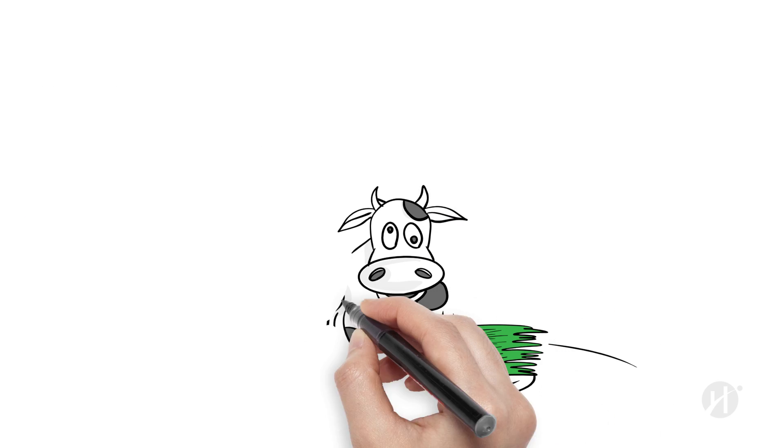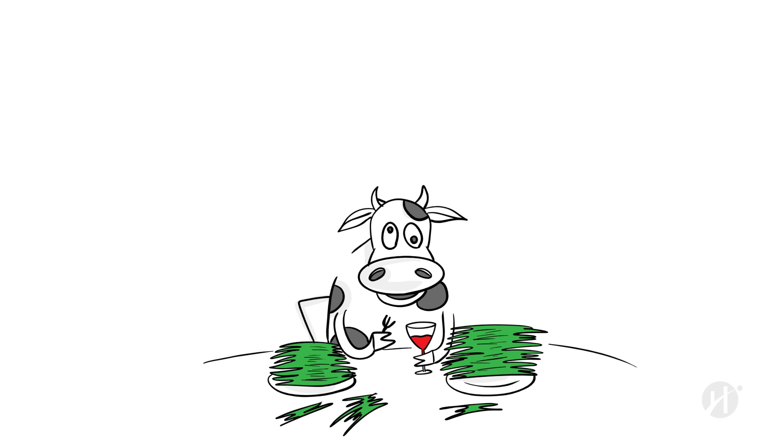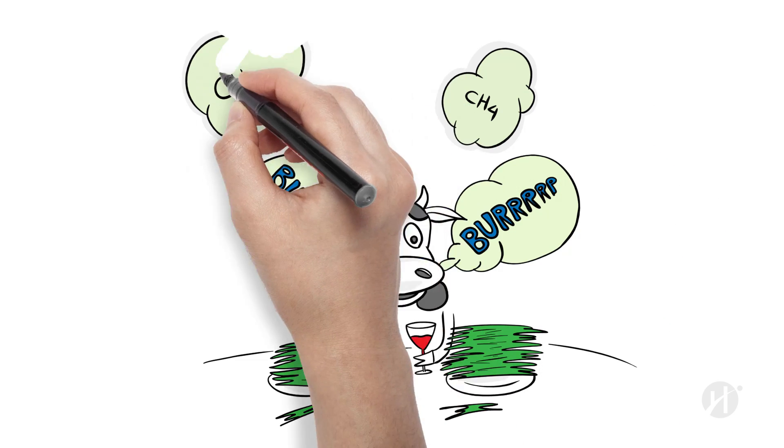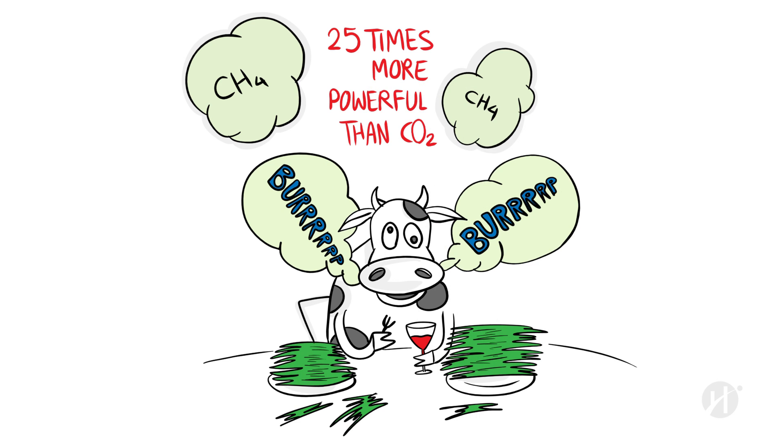When cows eat plants, they rely on bacteria in their stomachs to digest their food. While this is happening, methane, a greenhouse gas 25 times more powerful than carbon dioxide, is released into the atmosphere, contributing to the Earth's warming.